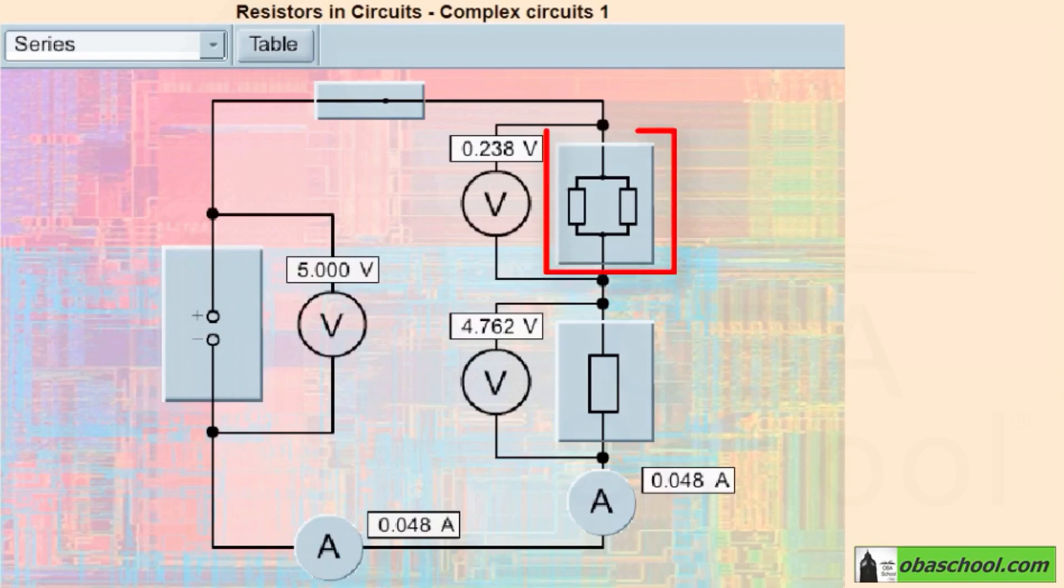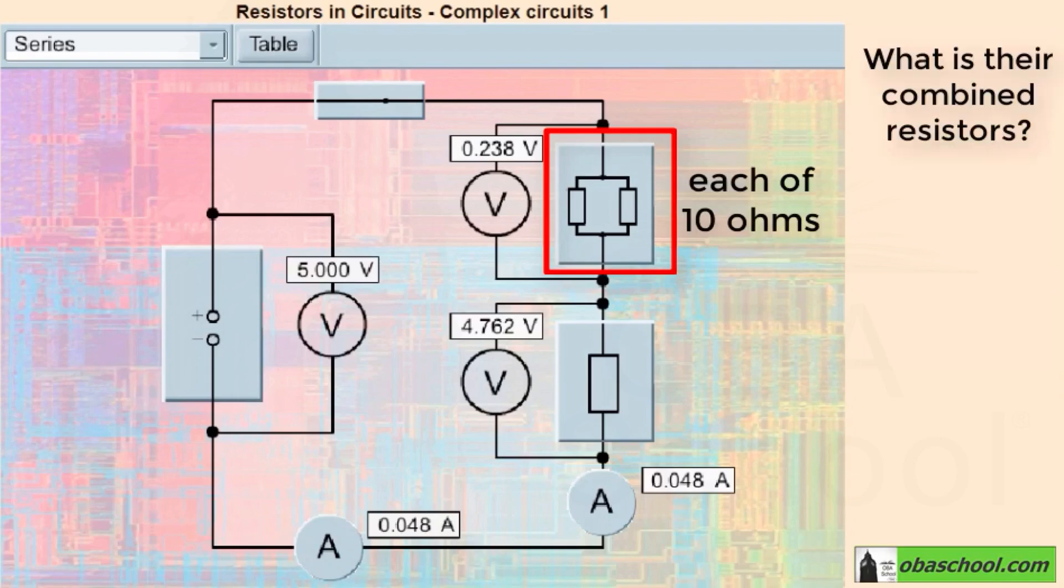The resistors in parallel each have a resistance of 10 ohms. What is their combined resistance?